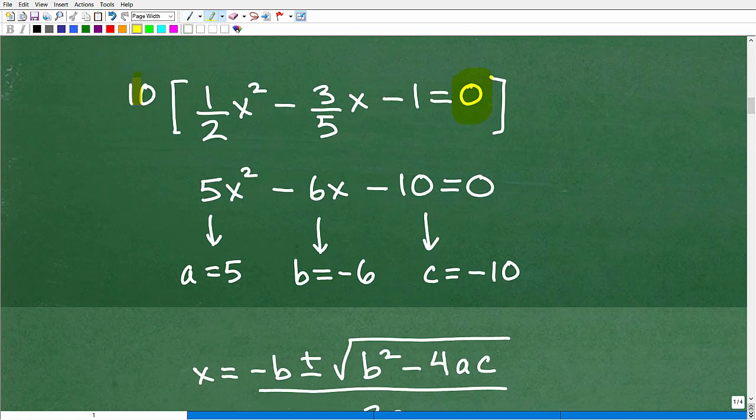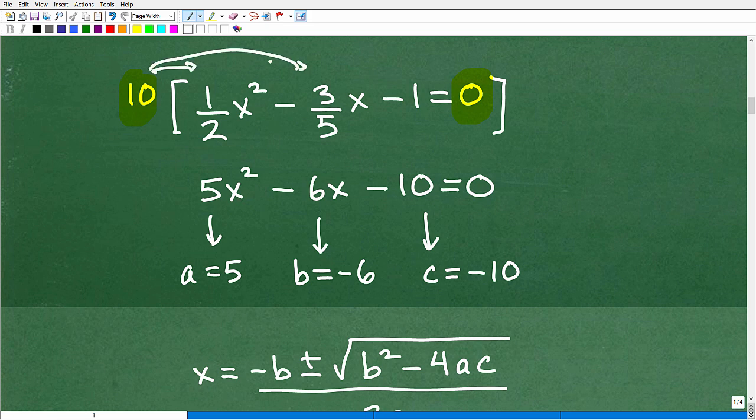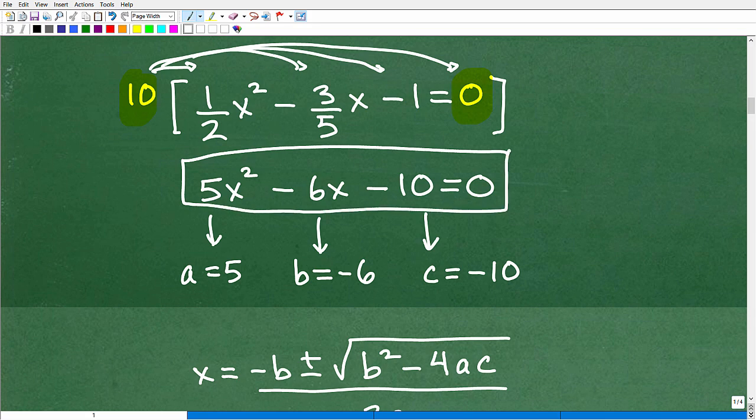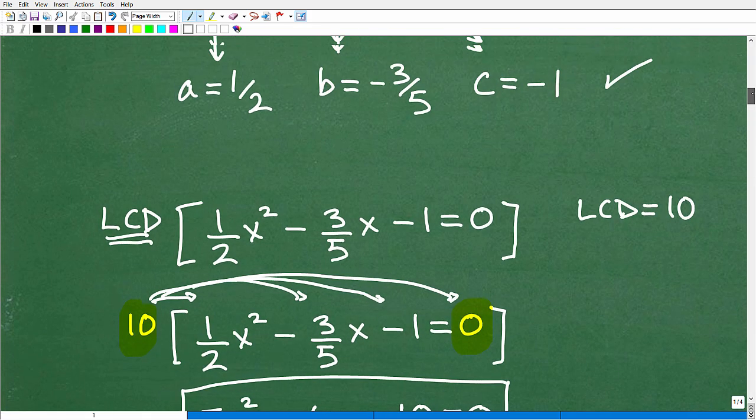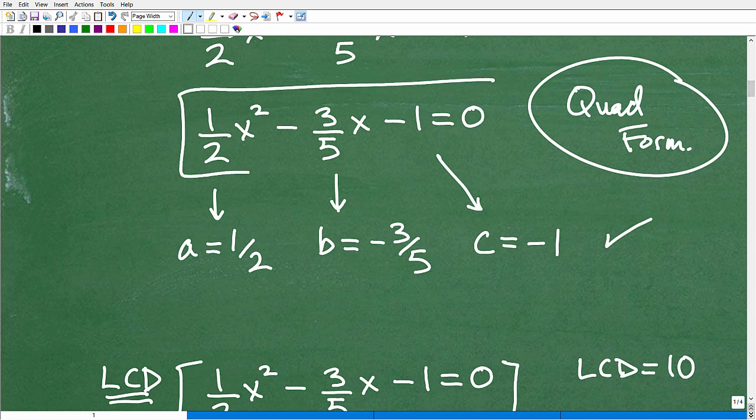So if we multiply this entire equation by 10, we're going to get a new equivalent equation that doesn't have any fractions. And by the way, we love zero in math because we can multiply anything by it, and it is zero. So let's go ahead and see how this works. So here's our LCD. We're going to multiply everything in the equation by our LCD, so 10 times 1 half gives me 5x squared. So 10 times negative three-fifths gives me 6x, and then 10 times negative 1 is negative 10, and then 10 times 0 is 0. So now this equation here, if we solve this equation, this is equivalent to solving this equation.